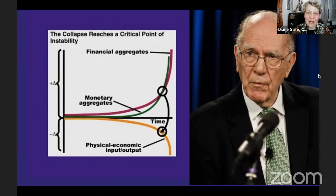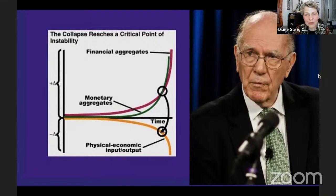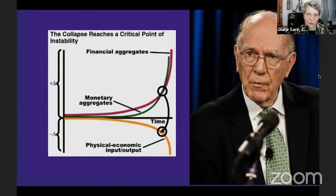When you get a hyperbolic function like this, you reach the asymptote where it goes vertical — that's a shock front where the system blows out. That happened in 2008. Did we change our ways? No — we printed more money and created another bubble. Part of this Green New Deal fits in here too, because the carbon swaps and all of that are a way of creating a new bubble to prop up the system.